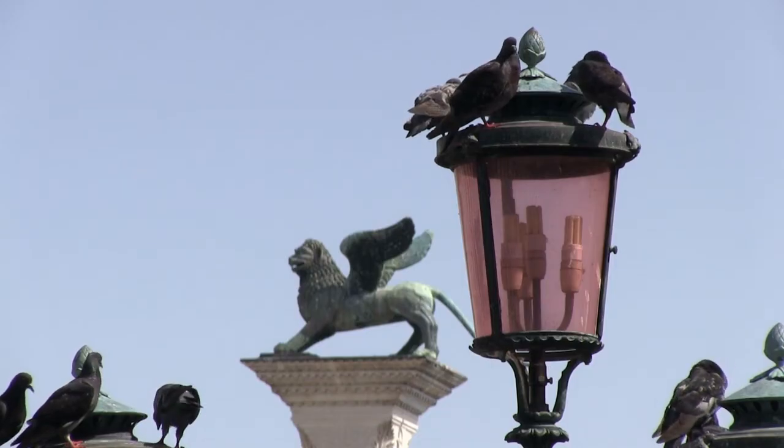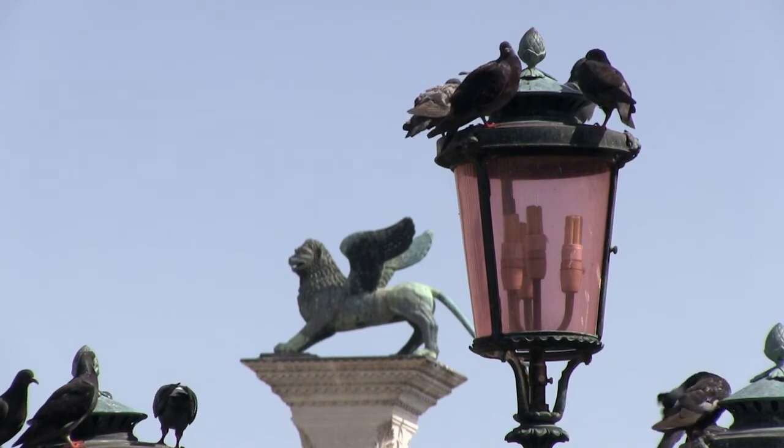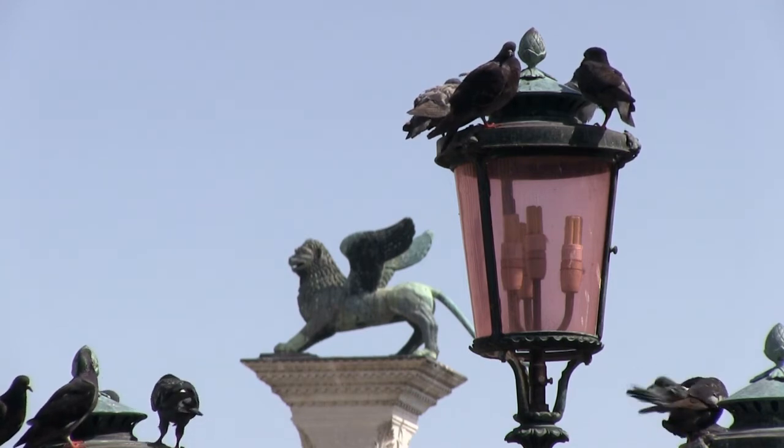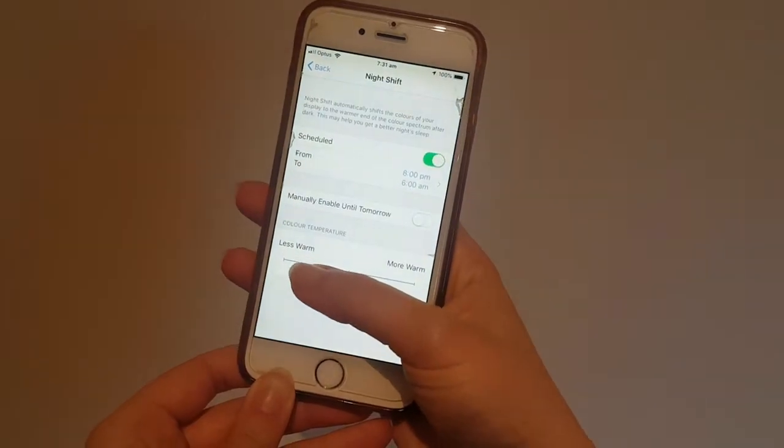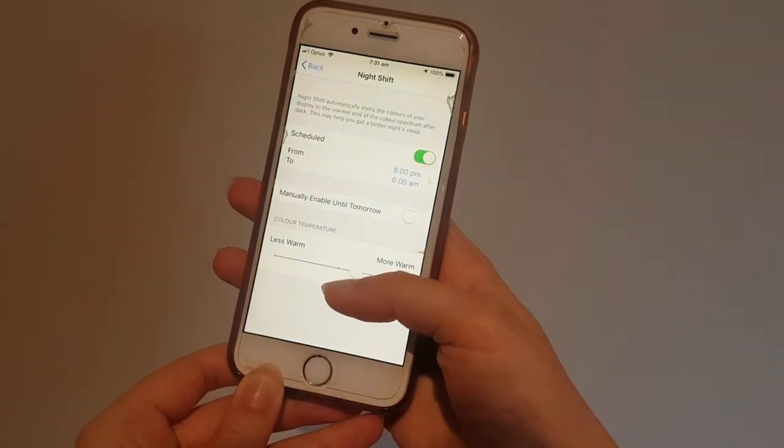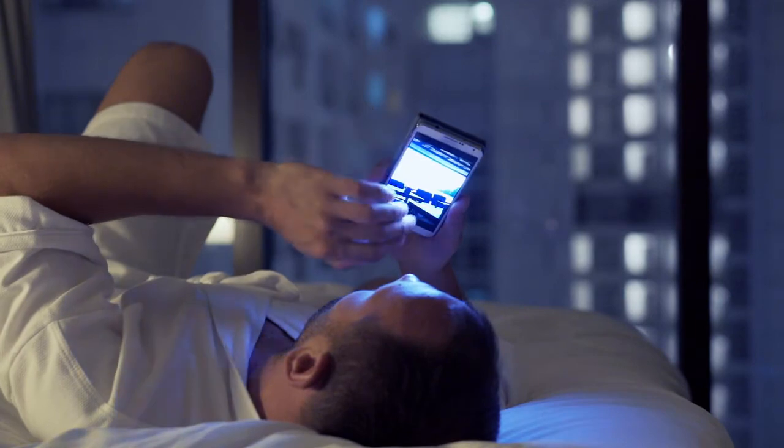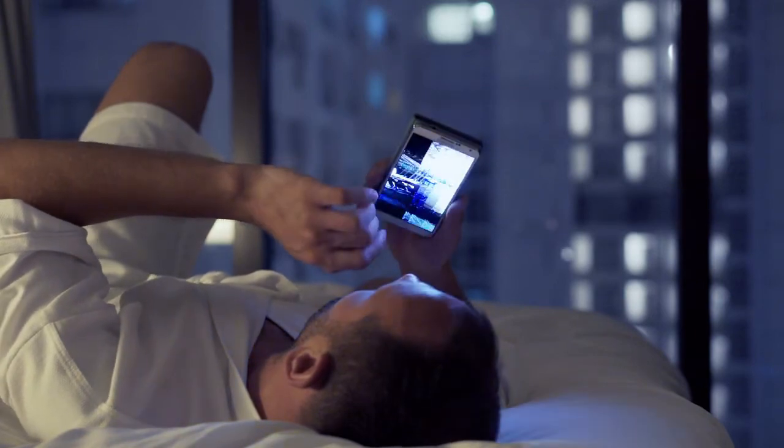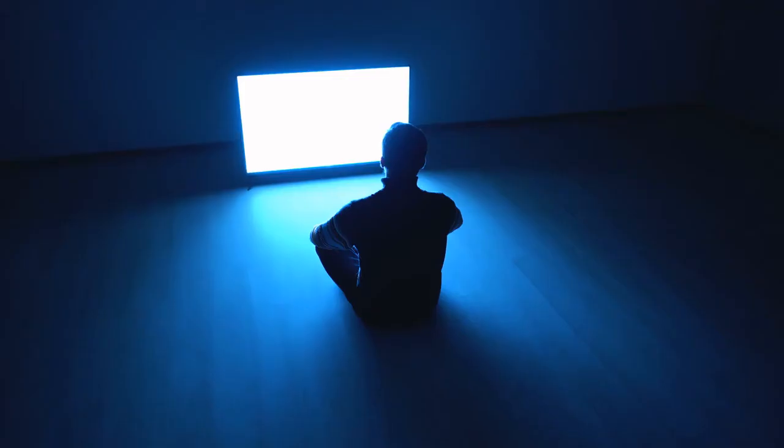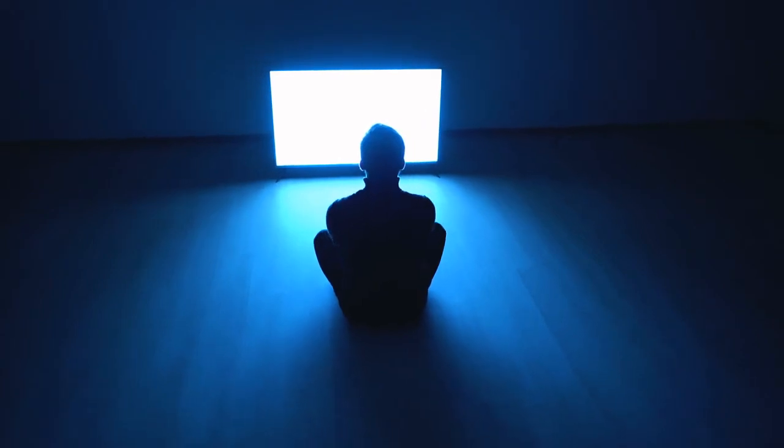But maybe some types of light could be better than others. To help people sleep, we have features on our smartphones that make the screens look more amber and less blue at night. And that's because blue light has a particularly strong effect on melatonin. This is true not just for humans, but for other species too.